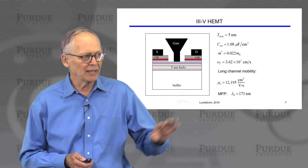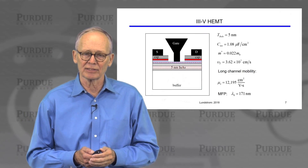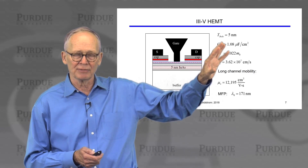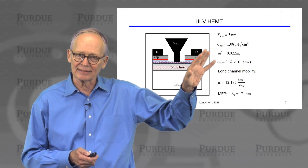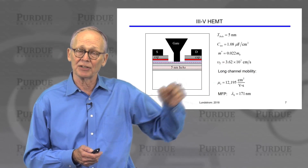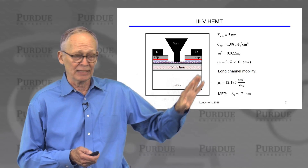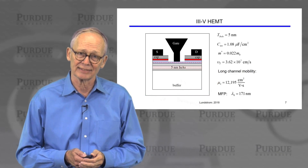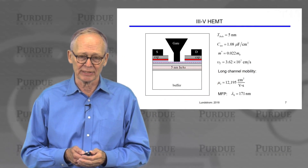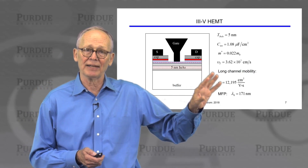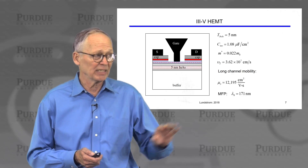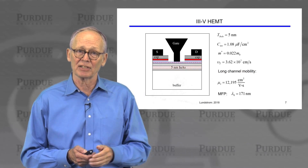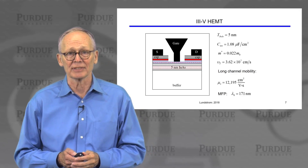For the HEMT, the thickness of the thin indium arsenide layer is about five nanometers, comparable to the silicon thickness in the ET-SOI transistor. We have measured the inversion layer capacitance. The effective mass of indium arsenide is very light, which leads to a much higher unidirectional thermal velocity. The long-channel mobility in bulk indium arsenide is enormous compared to silicon — almost ten times as high. We deduce a mean free path of about 170 nanometers for this 30 nanometer channel length transistor, so the mean free path is longer than the channel length and we expect the device to operate close to the ballistic limit.